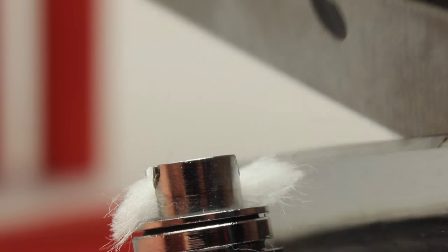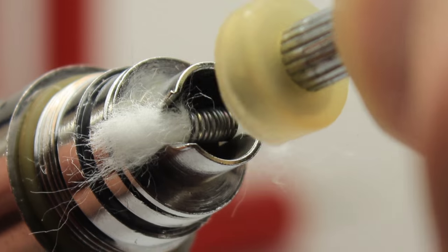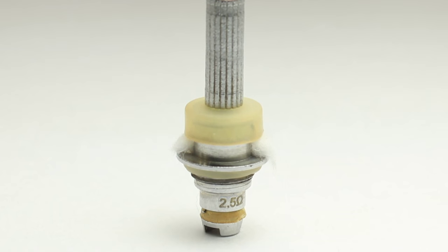Cut both ends of the cotton close to the base. Click the chimney back on. And now you have a new coil.